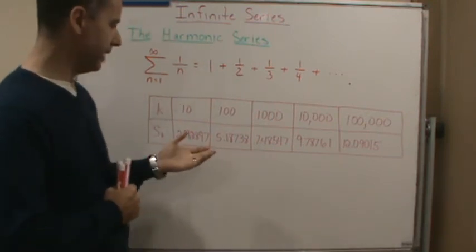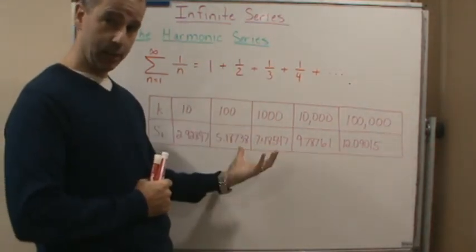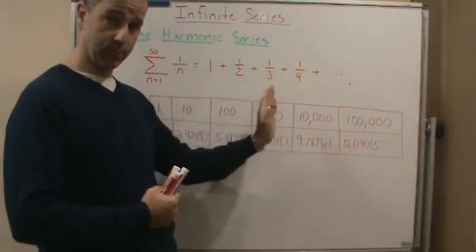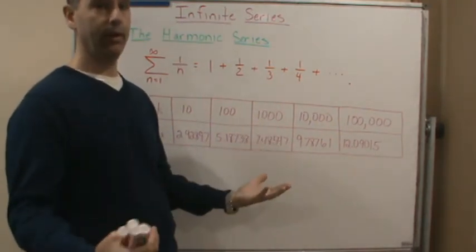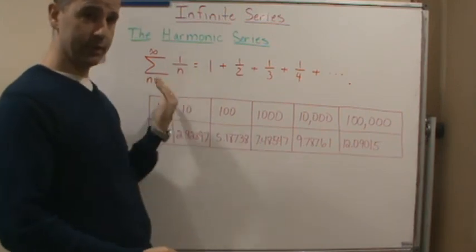Now, the way we're going to do that is to show that the sequence of partial sums is unbounded. We need to show that it's unbounded. Once we show that the sequence of partial sums is an unbounded sequence, then therefore it's a divergent sequence, and therefore the series diverges.